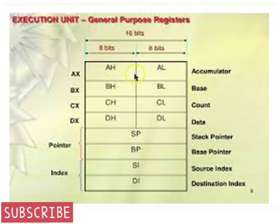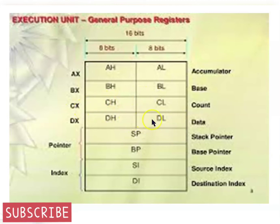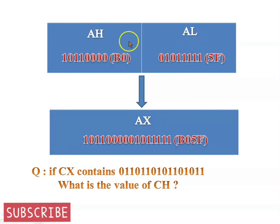Each pair also operates as a single 16-bit register. AH and AL can operate as the pair AX; BH and BL can operate as BX; CH and CL as the 16-bit register CX; and DH and DL can operate as the 16-bit register DX. This is how two 8-bit registers become one 16-bit register — the 8 bits of AH are simply attached at the end of the 8 bits of AL to make a 16-bit register.